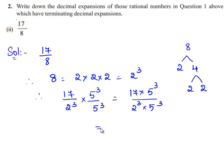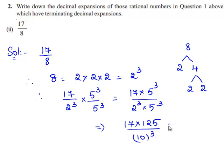This implies 17 times 5 cubed is 125, upon 2 times 5 is 10, so 10 whole cubed. Therefore, 17 times 125 is 2,125 upon 10 cubed, that is 1000.